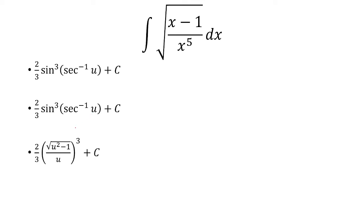So we should draw a right triangle. So the angle here, we'll call it theta. So recall we said u was equal to secant theta. So this is theta. So secant is hypotenuse over adjacent. So think of this as u over 1. So it's hypotenuse over adjacent. Pythagorean theorem says this is the square root of u squared minus 1.